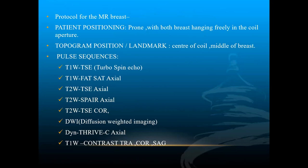For the MRI protocol, the patient is positioned in the prone position with the breast hanging freely in the coil apertures, and the topogram is centered in the coil. Sequences acquired include T1, T2 weighted, T1 fat-sat, T2 STIR, diffusion weighted imaging (DWI), and T1 post-contrast images in transverse and sagittal planes.